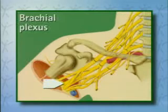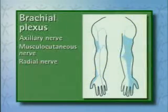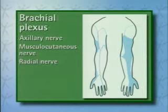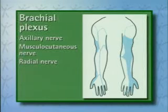The radial nerve runs along the dorsal side of the upper arm to the epicondyle of the humerus. It provides sensory innervation of the skin on the extensor side of the arm and in part the radial side of the hand. It also supplies motor fibers to the extensors of the upper and lower arm and of the hand.